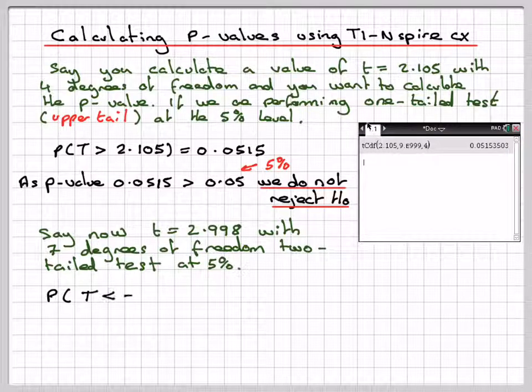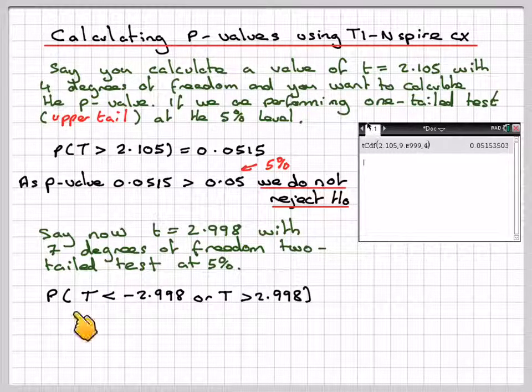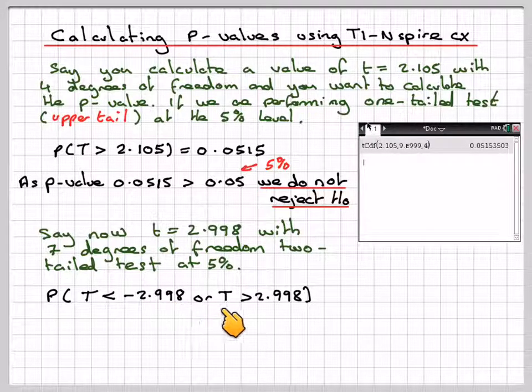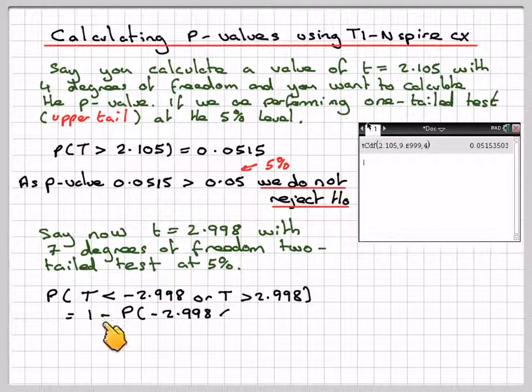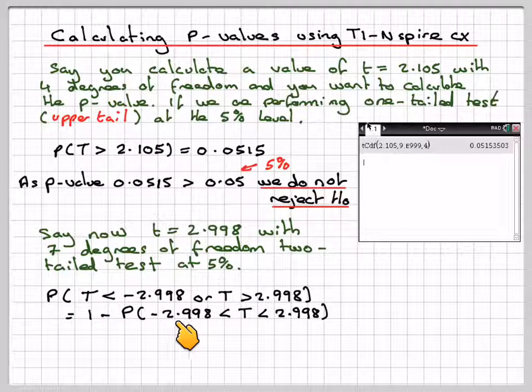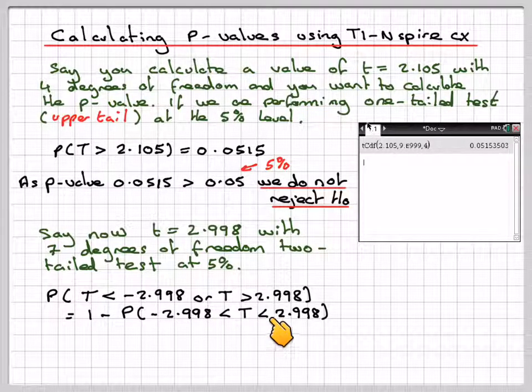This time we calculate P(t < -2.998 or t > 2.998). This is best done by calculating 1 minus the probability that t is between -2.998 and 2.998.